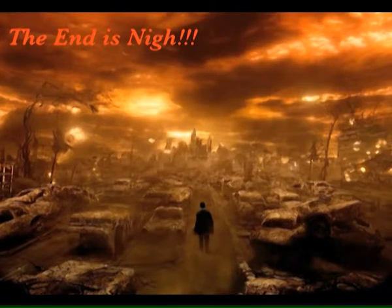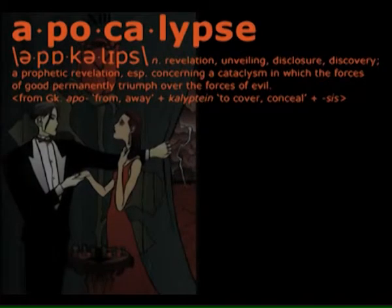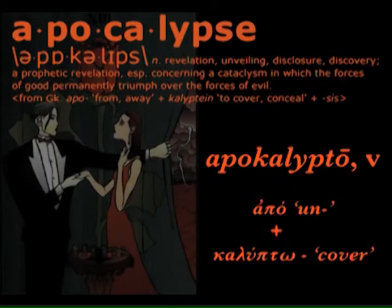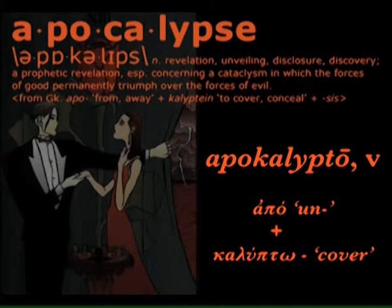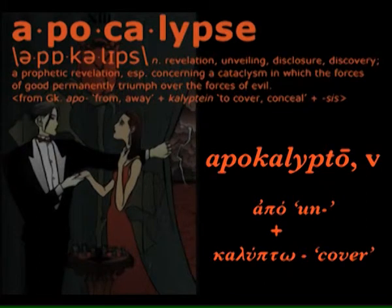We're going to talk about the word as it comes from the Greek — Apo and Caluto — which means 'un and cover' or 'away and cover.' It means to remove a veil. And that's the word we have in English: revelation. 'Re' is away and 'vellum' is a veil. Other cognates are unveiling, disclosure and discovery.